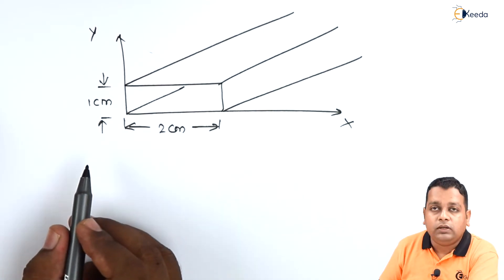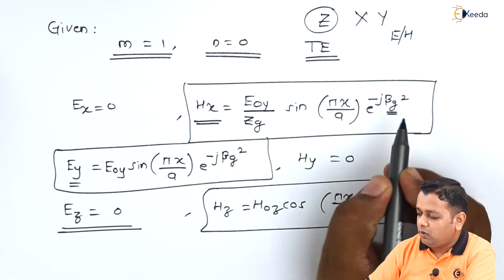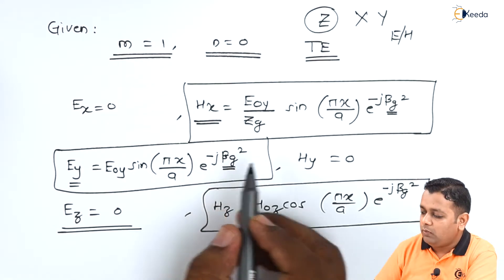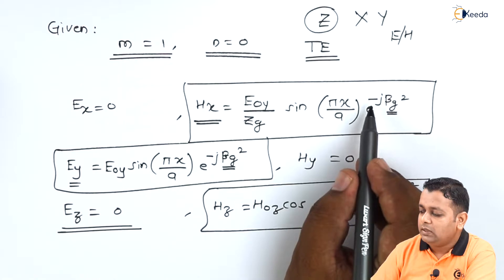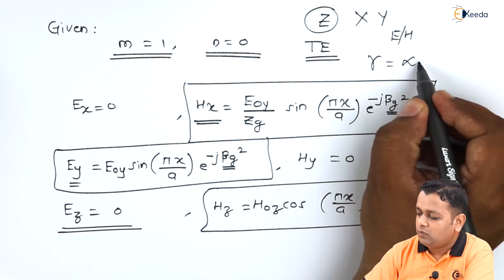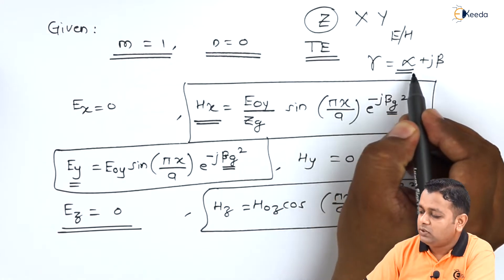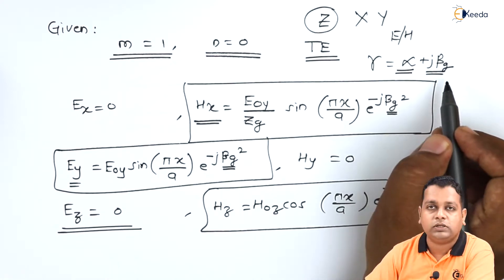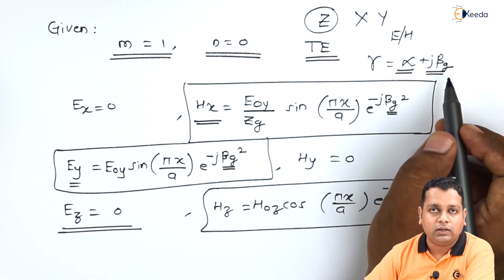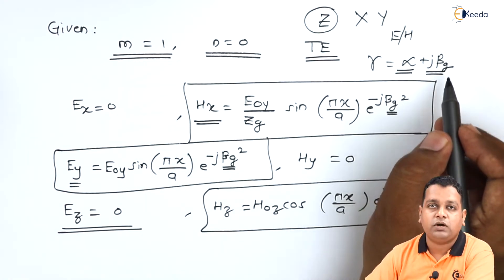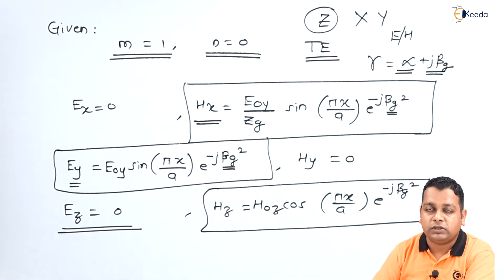The field equations depend on beta subscript G, the phase shift constant. In the exponential term e^(−jγz), gamma is the propagation constant where gamma equals alpha plus j-beta. Considering attenuation alpha equals zero, we retain only j times beta. Beta subscript G is the phase shift constant corresponding to the waveguide propagation that we will now compute.